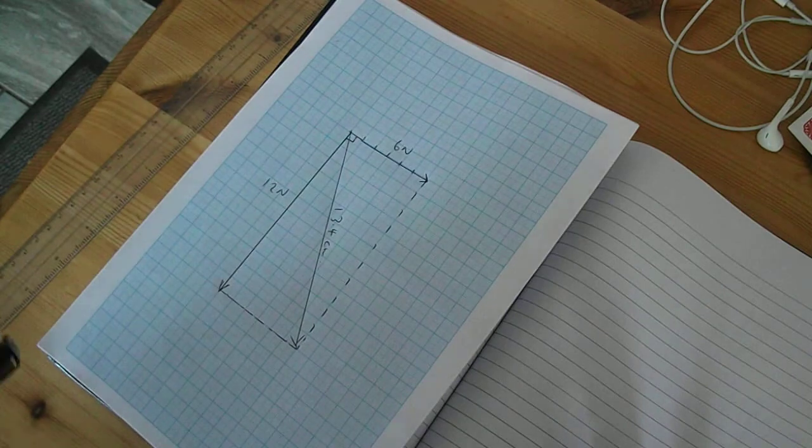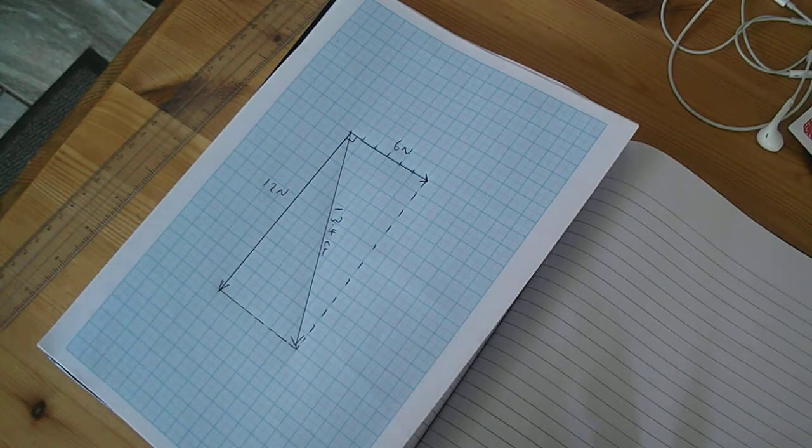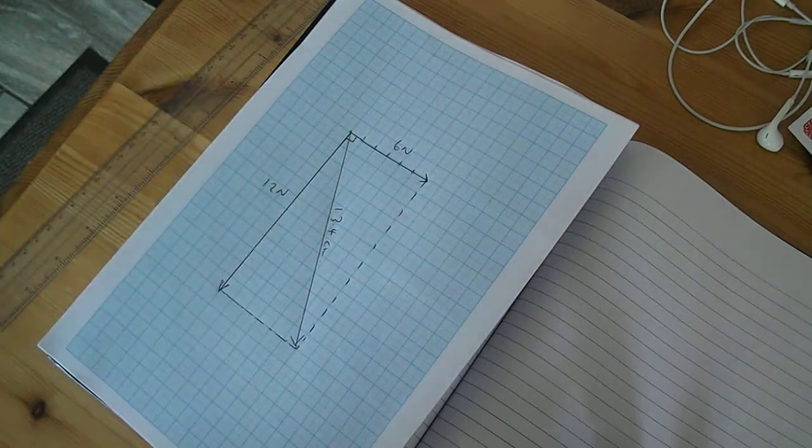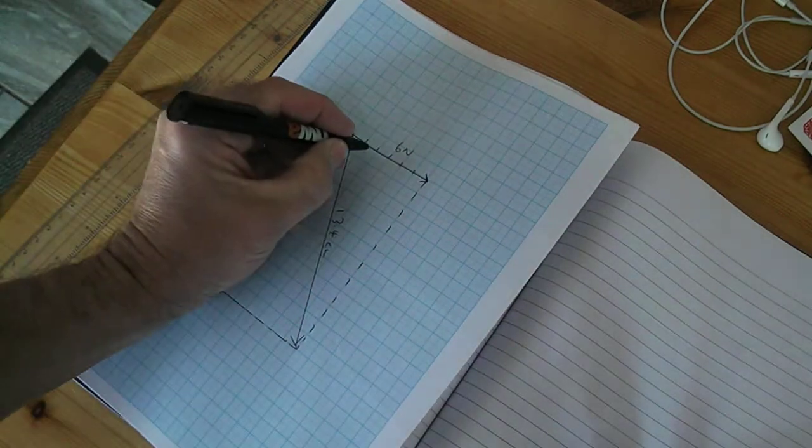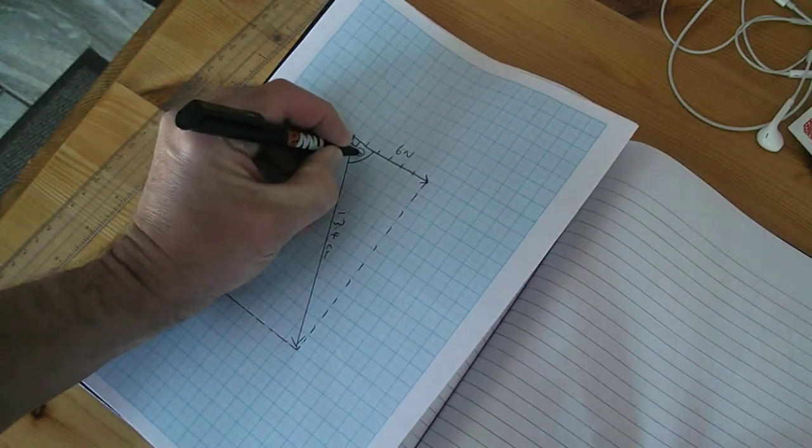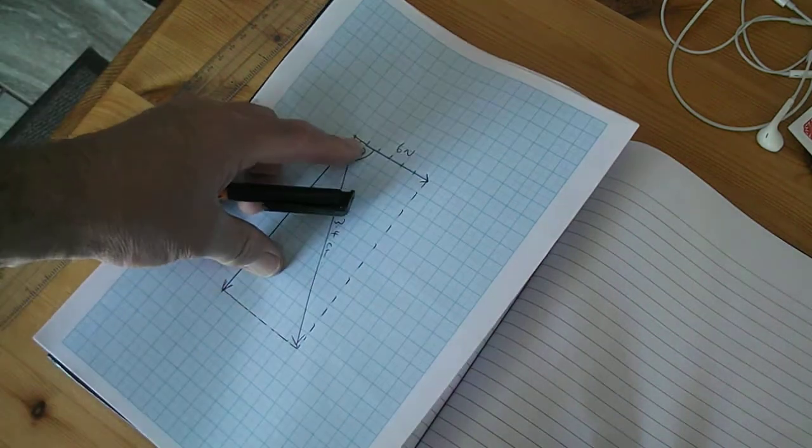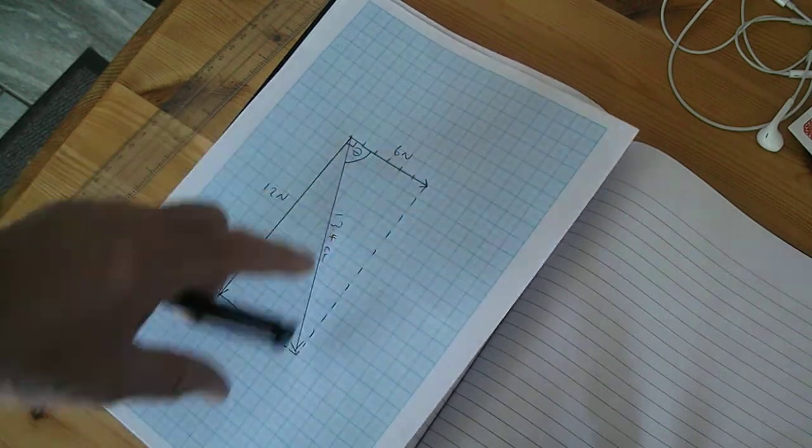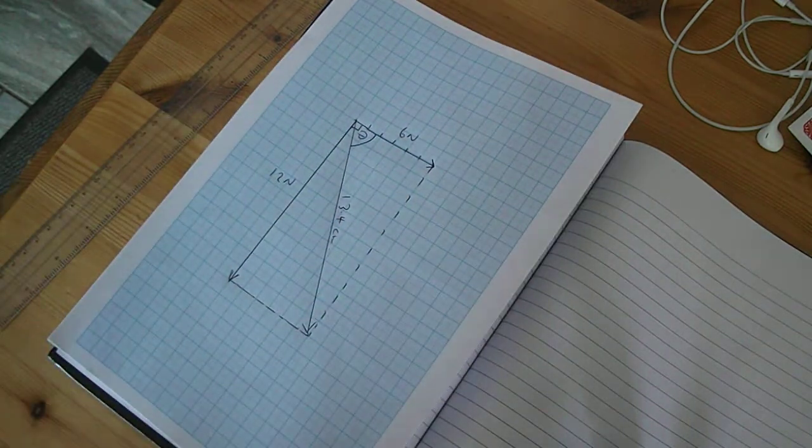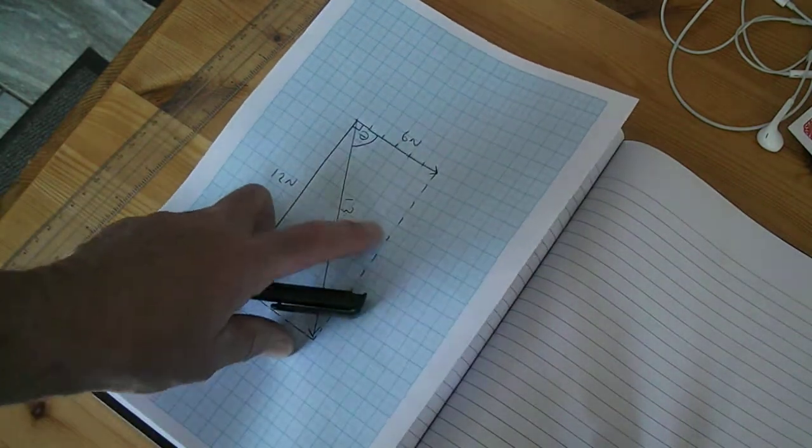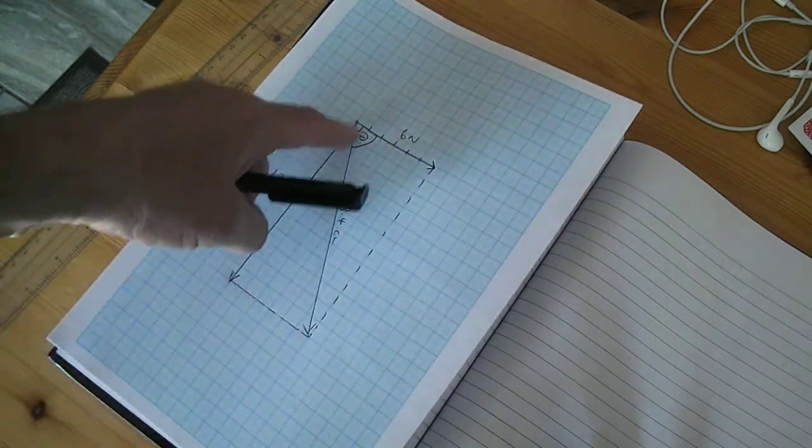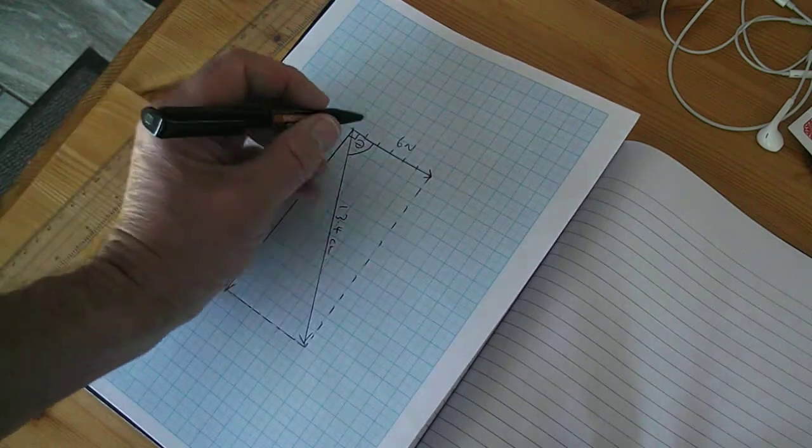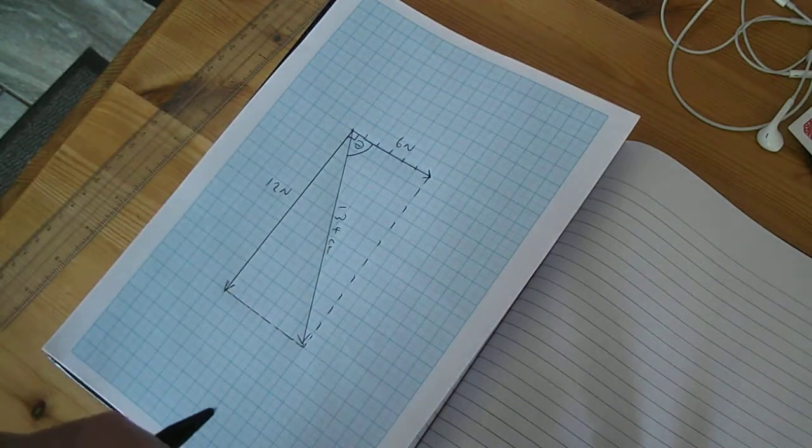Right, so we know from last week that we can get a much more accurate result for this length and indeed this direction, this angle. Because in engineering we need to know the angle of the force, the direction of the force, we need to know the magnitude of the force. We know from last week we can work this out using Pythagoras theorem and we can work this out using a trigonometrical solution as well.